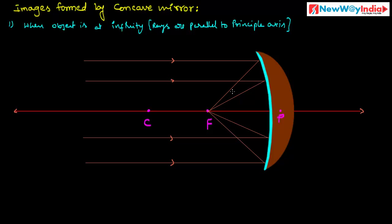This is the principal focus. These reflected rays meet here, and the image is formed at the principal focus. So when an object is placed at infinity, the image is formed at the principal focus in front of the concave mirror.